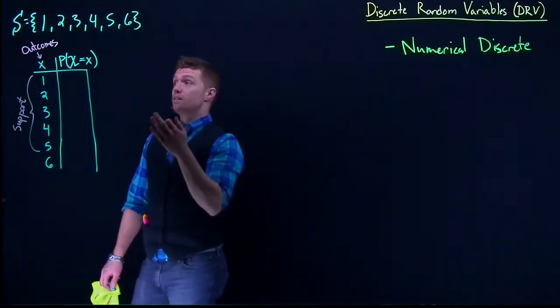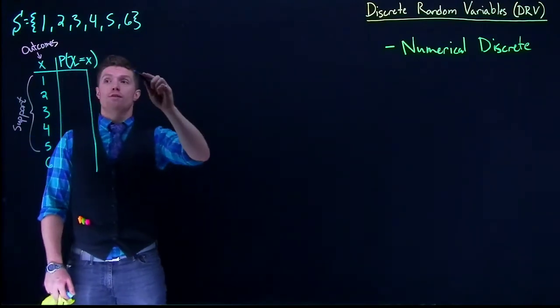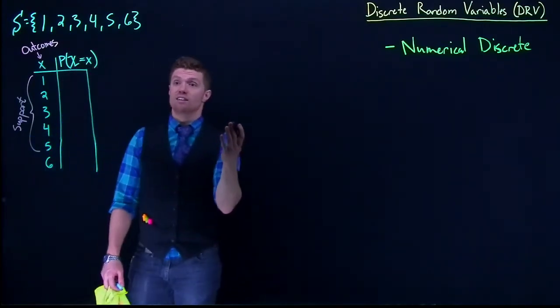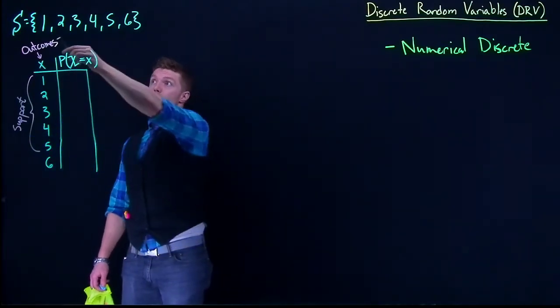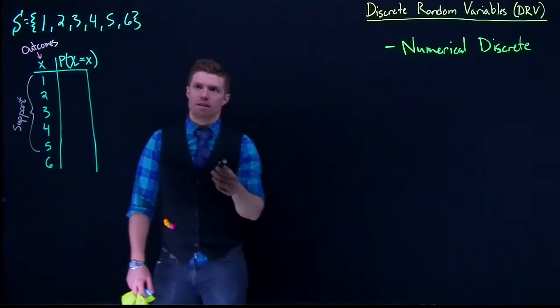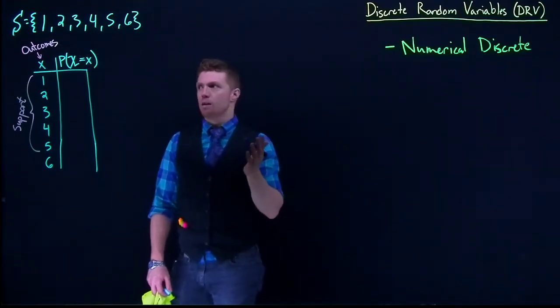With our dice, this one's pretty easy. We know that in order to find the probability of any given event, it's going to be the number of outcomes in the event divided by the number of outcomes in the sample space.